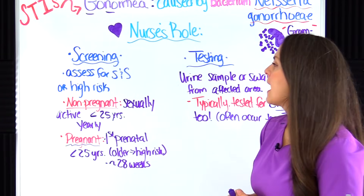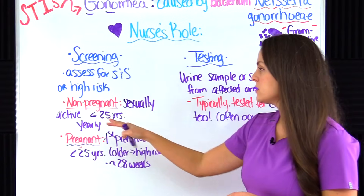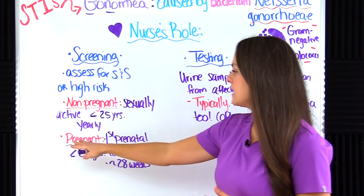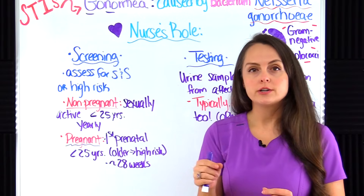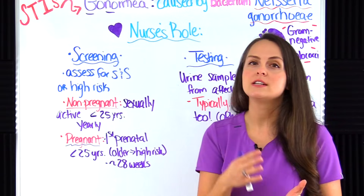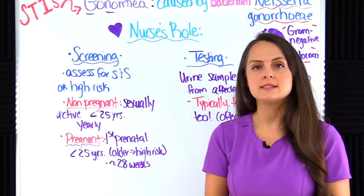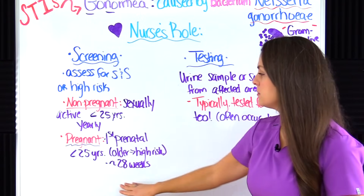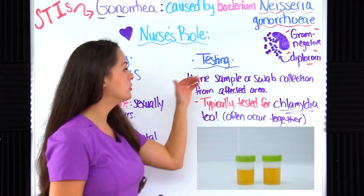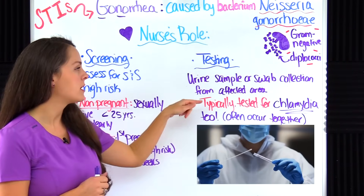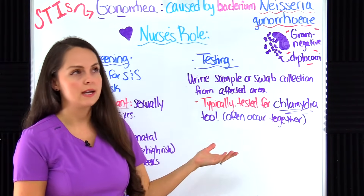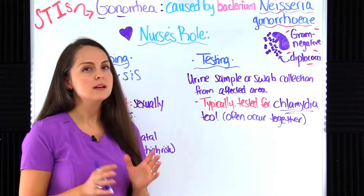The CDC recommends that non-pregnant sexually active patients under 25 years of age be tested yearly for this STI. If the patient is pregnant, they should be tested during their first prenatal visit — this includes patients under 25. Older pregnant patients should be tested at the first prenatal visit if they are at high risk, and again during the third trimester at around 28 weeks. Testing can include a urine sample or a swab from the affected area. Whatever we test for gonorrhea, chlamydia will also typically be tested for, as these two STIs tend to occur together.